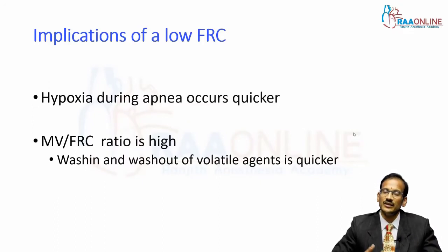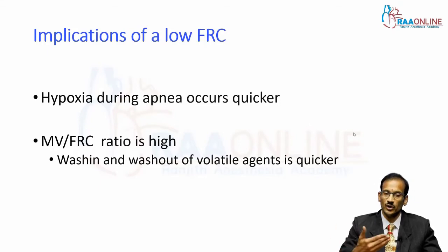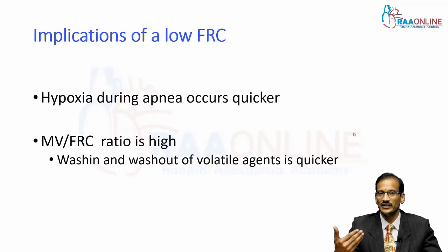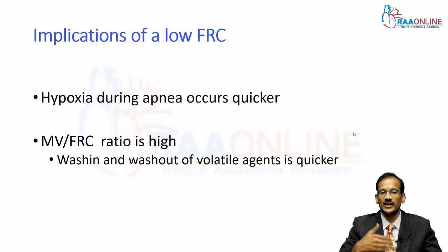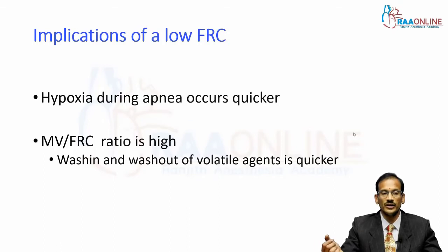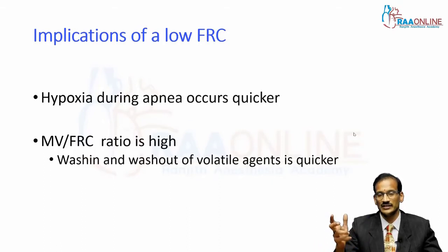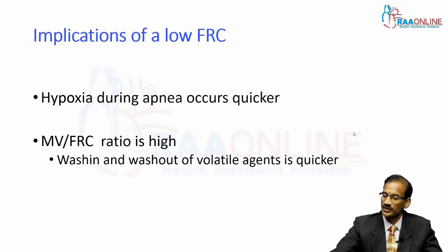When we do inhalation induction, the onset of action of volatile anesthetics is much quicker because the minute ventilation is high. As we saw in the earlier slide, the minute ventilation has to be high in a small child because of higher metabolic demand. On the other hand, the FRC is low. This ratio of minute ventilation to FRC determines the wash-in and wash-out of volatile anesthetics. So even at the end of anesthesia, when you switch off the volatile anesthetic, they tend to wake up much quicker with gas-mode anesthesia.